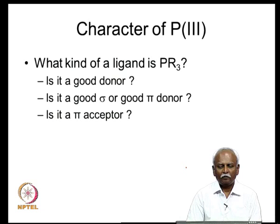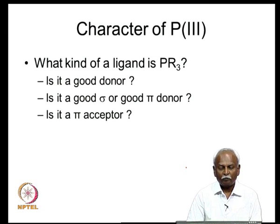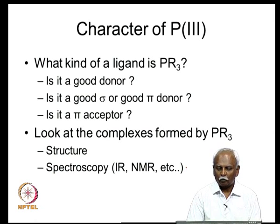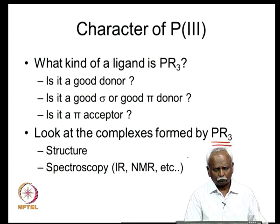Phosphorous(III) ligands can be readily synthesized with a variety of R groups. The question arises: what kind of ligand is PR₃? Is the PR₃ group a good sigma donor, a pi donor, or a pi acceptor? If you look at complexes formed by triphenylphosphine or trialkyl phosphines, one can understand based on structure and spectroscopy what kind of donor we are dealing with. Let us take a look at some of the chemistry in these molecules.